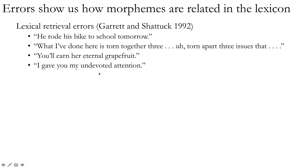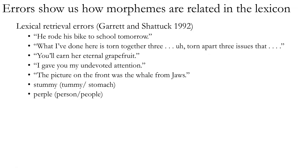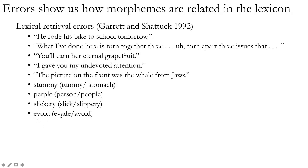'I gave you my undevoted attention' instead of 'undivided' — the phonological representation, the phonemic transcription, is actually very close between 'devoted' and 'divided'; it's just a matter of the vowel /o/ being replaced by the diphthong /aɪ/. Even more interesting errors are when you're making up a new word that doesn't actually exist. If you meant to say 'stomach' and said 'stummy,' or meant to say 'people' and said 'purple' — this might be because two words related in meaning ('tummy' and 'stomach') also share something phonologically. 'Slickery,' blending 'slick' and 'slippery,' or 'evade' and 'avoid' — these errors tell us that meaning and form together have a lot to do with how words are related in the mental lexicon.